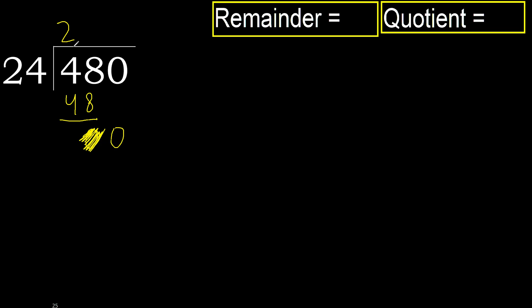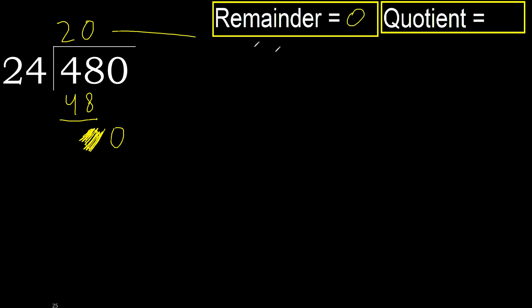Therefore finish it — complete. Always complete with 0, because here we finish it with this number. 480 divided by 24 is 20.